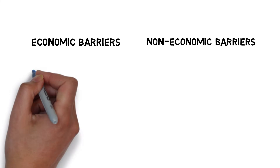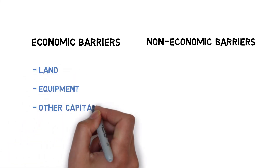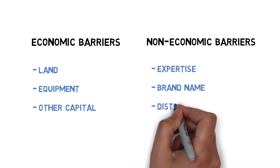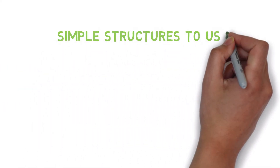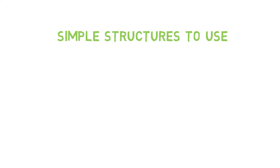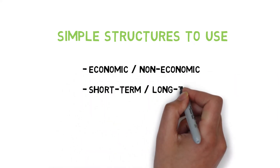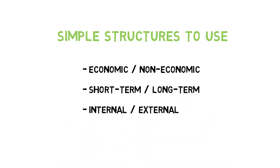Economic barriers might include things like land, equipment, and other capital, while non-economic barriers include things like wine production expertise, brand name, and distribution channels. The next time you answer a qualitative question, try to structure it with a simple two-element framework such as economic/non-economic, short-term/long-term, or internal/external. This simple addition can make a big difference.